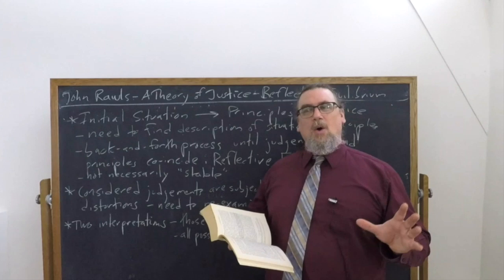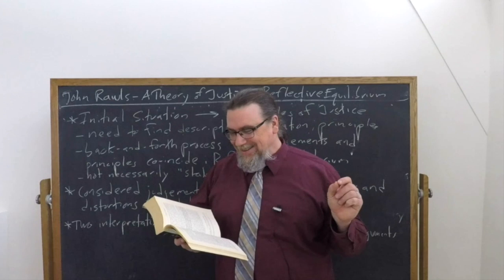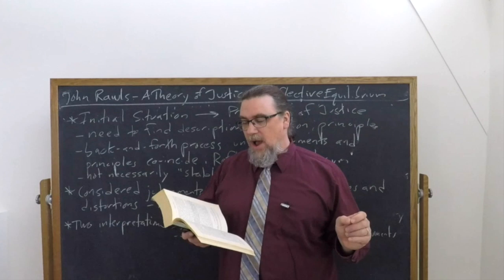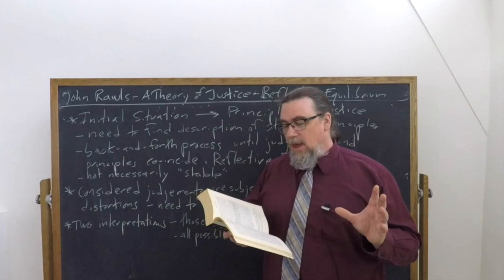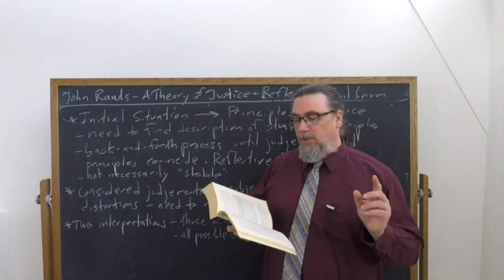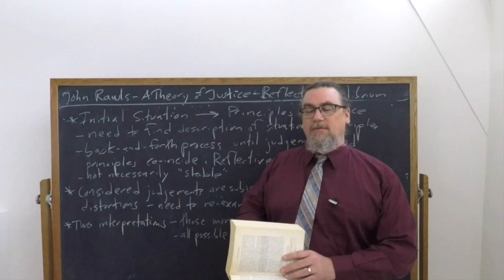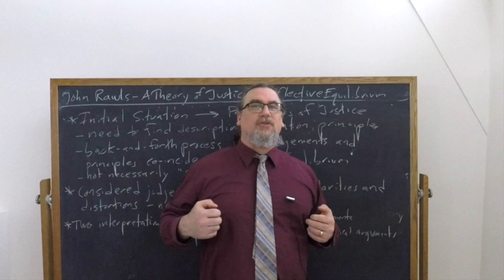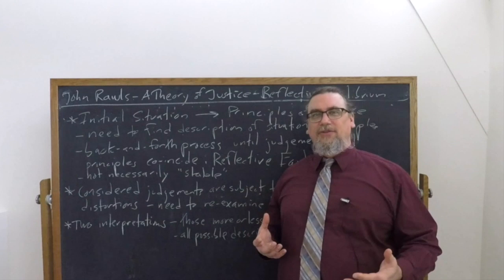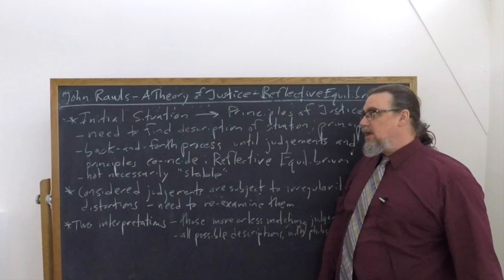Going back and forth — sometimes altering the conditions of the contractual circumstances and other times withdrawing our judgments and conforming them to principle — Rawls assumes we will find a description of the initial situation that both expresses reasonable conditions and yields principles which match our considered judgments, duly pruned and adjusted. This is what he calls reflective equilibrium: a state, an end position that you're getting to, and also the process by which you actually get there. There's this back-and-forth process until the judgments and the principles coincide.